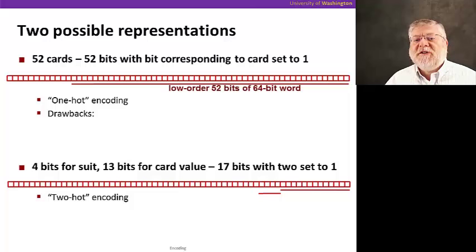So here's a very simple encoding to start with. We have 52 different cards, so let's use 52 different bits, with the bit corresponding to the card that we have set to one. That would let us use 52 bits of a 64-bit word in what's called a one-hot encoding.